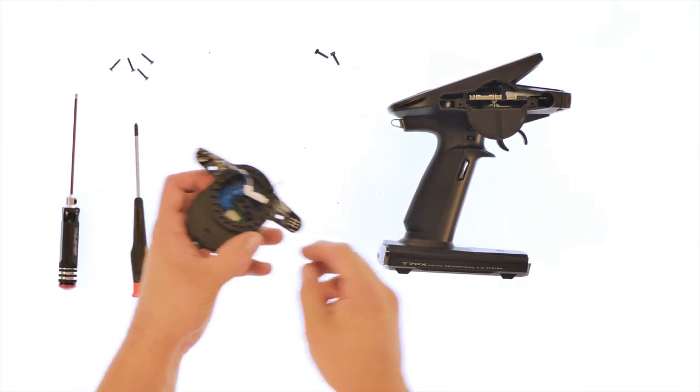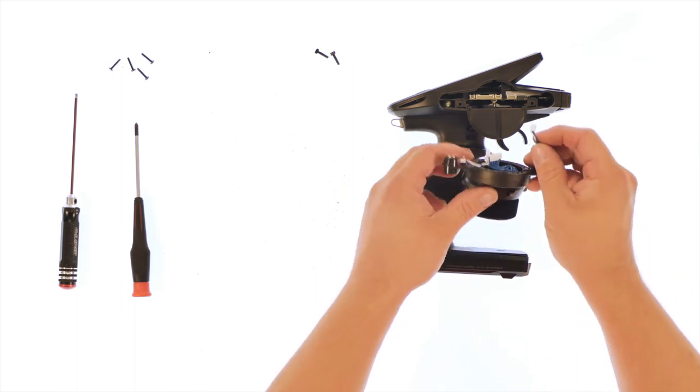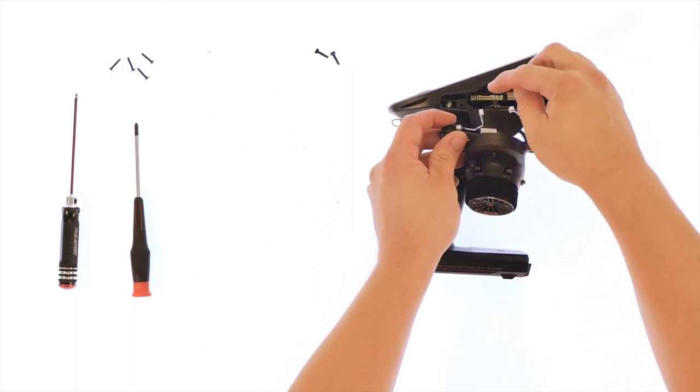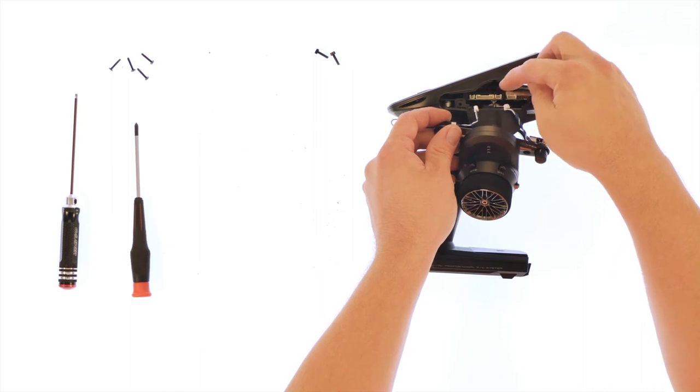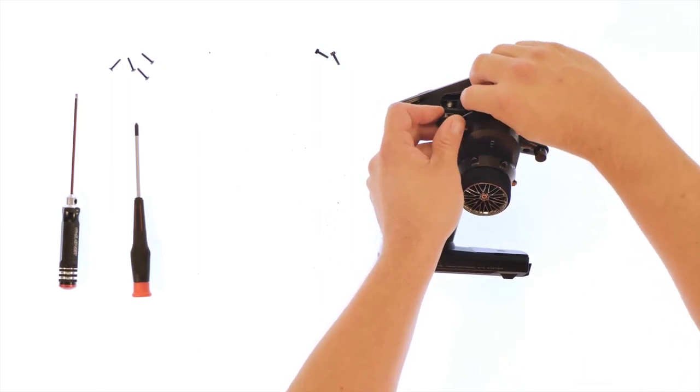Now once you've got those all tight, you'll plug back in the wire harness. It's pretty self-explanatory. There's a small plug, large plug, and a medium plug. They only plug in one spot.